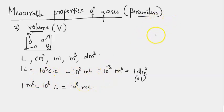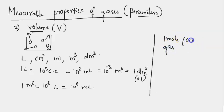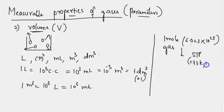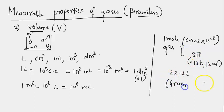One mole of gas — that is, 6.023 × 10²³ particles — at standard temperature and pressure (273 K and one bar pressure) occupies 22.4 liters of volume. This volume occupied by one mole of any gas at STP conditions is called gram molar volume.